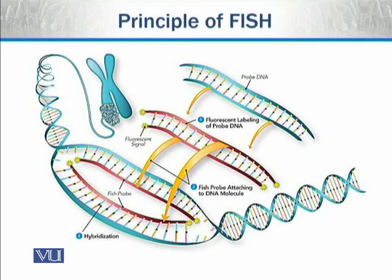On the right side is probe DNA. This probe DNA is labeled with some fluorescent label — for example, as written here: fluorescent labeling of probe DNA. So the DNA is labeled with a fluorescent tag.